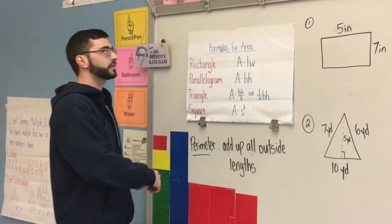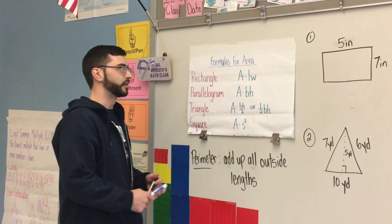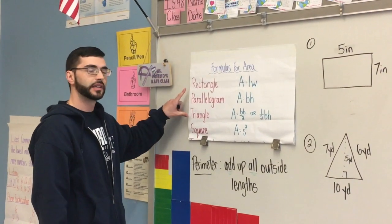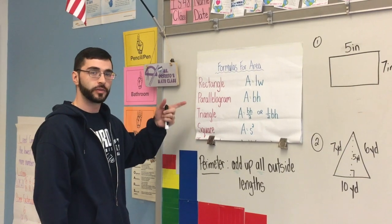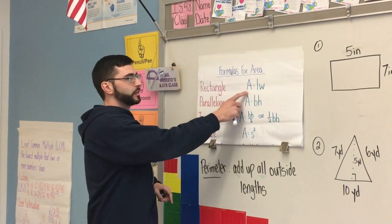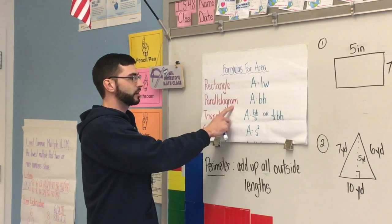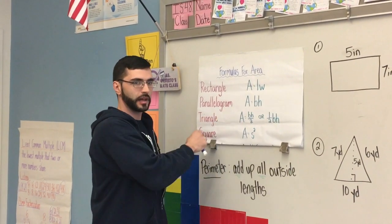So these are the formulas that we're going to be using today for this lesson to solve area. Each shape has its own unique formula. The rectangle, we're going to be using area equals length times width. The parallelogram, that's area equals base times height.